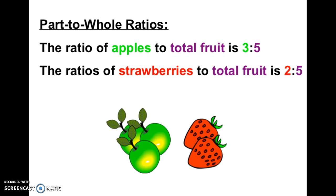When you do a part-to-whole ratio, you're looking at everything combined. In this case, the whole would be the total fruit. So the ratio of apples to total fruit is 3 to 5, because there are 3 apples and 5 pieces of fruit. The ratio of strawberries to total fruit is 2 to 5, because there are 2 strawberries and 5 pieces of total fruit.